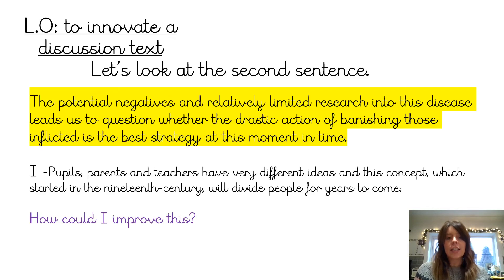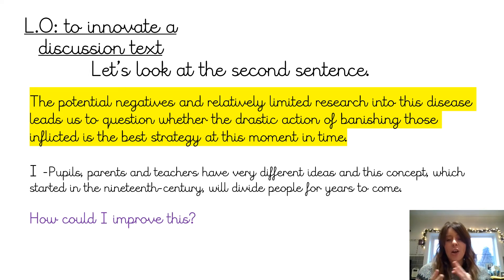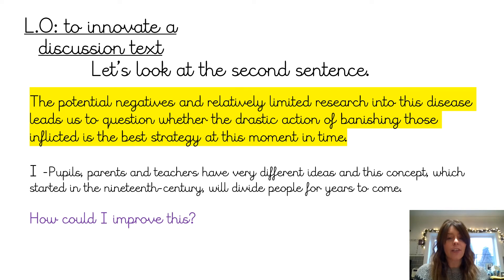The second sentence in the model text reads: the potential negatives and relatively limited research into this disease leads us to question whether the drastic action of banishing those inflicted is the best strategy at this moment in time. We come to the present and think about what's happening with this debate about school uniform. So: pupils, parents and teachers have very different ideas, and this concept, which started in the 19th century — wearing a school uniform — will divide people for years to come.